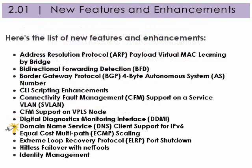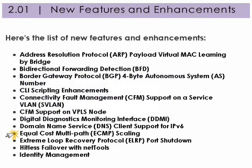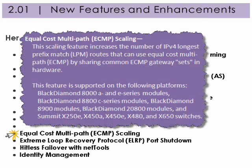Domain Name Services Client Support for IPv6. DNS Client Support for IPv6 enables Xtreme XS applications to communicate with DNS servers over an IPv6 network. Equal Cost Multipath Scaling. This scaling feature increases the number of IPv4 longest prefix match routes that can use equal cost multipath by sharing common ECMP gateway sets and hardware.